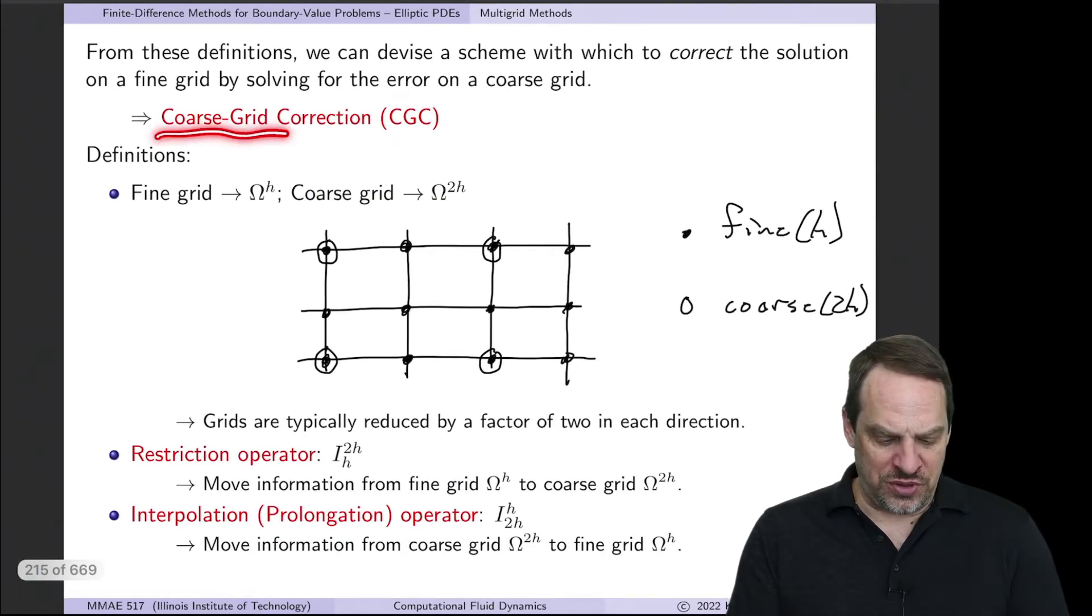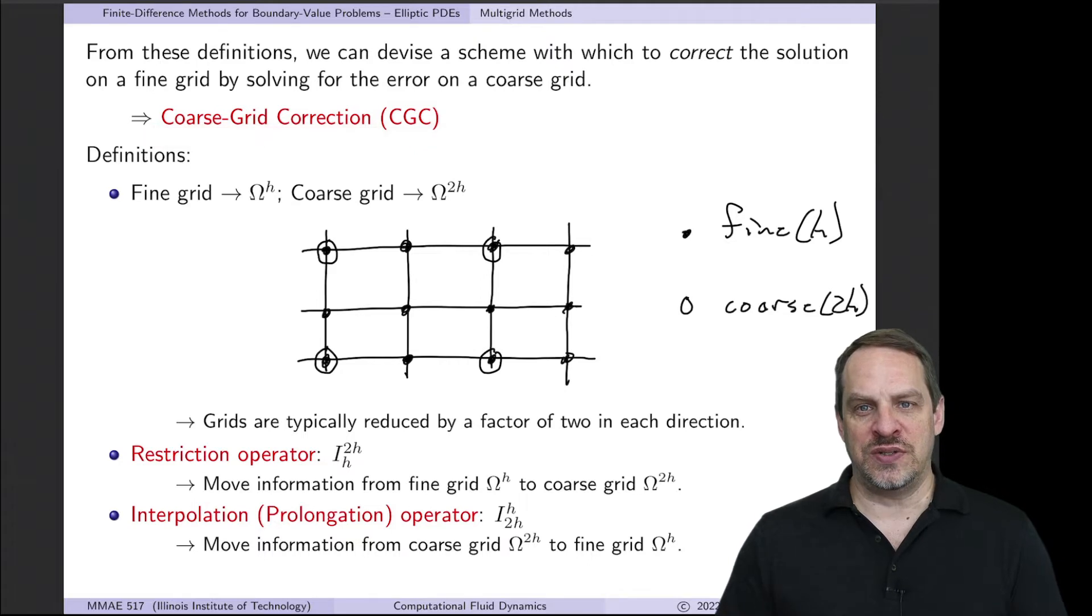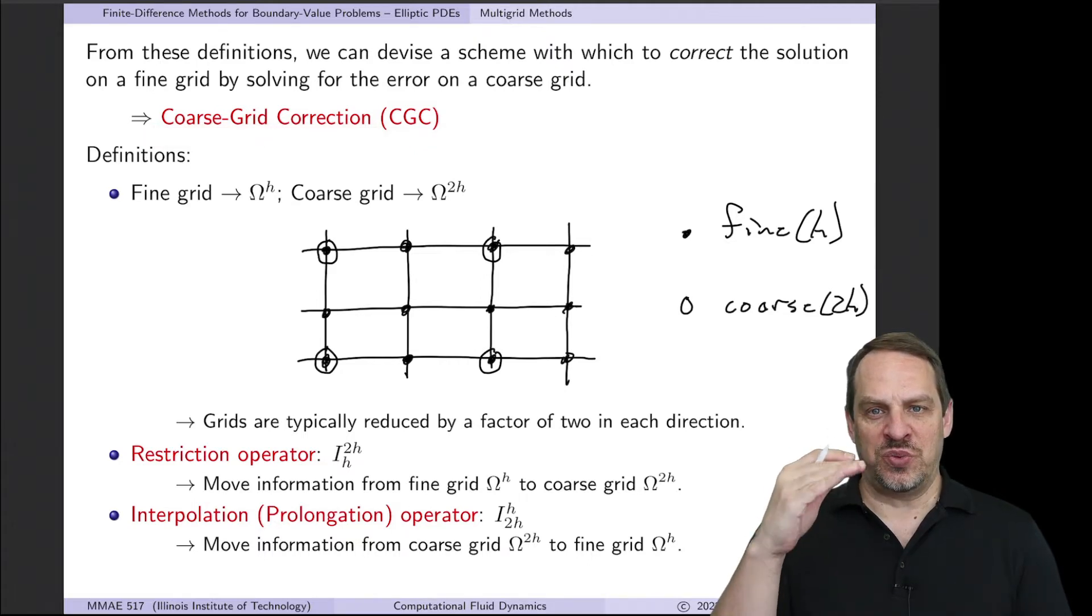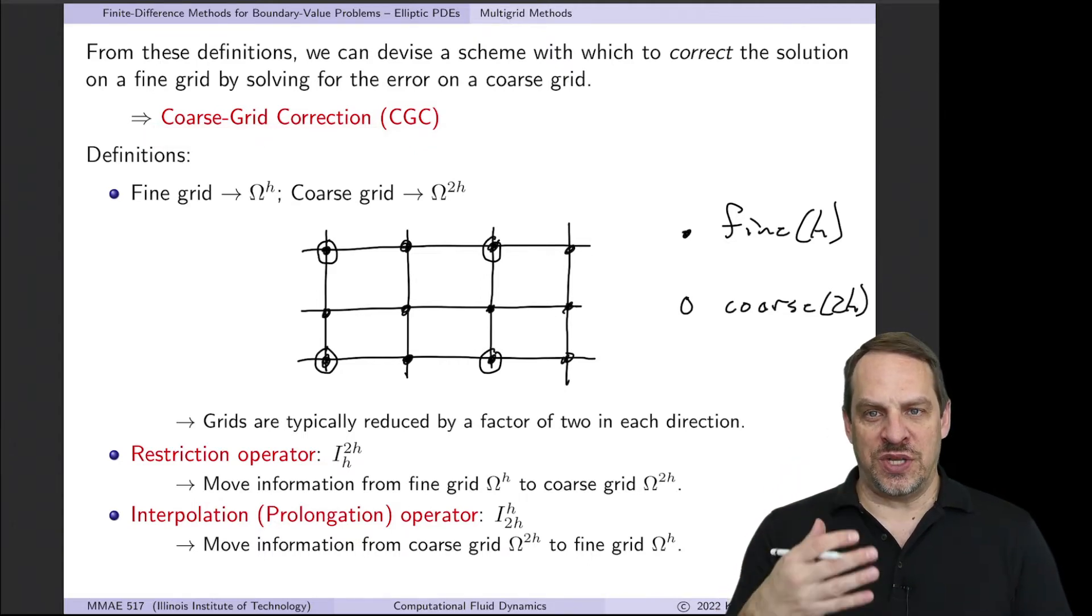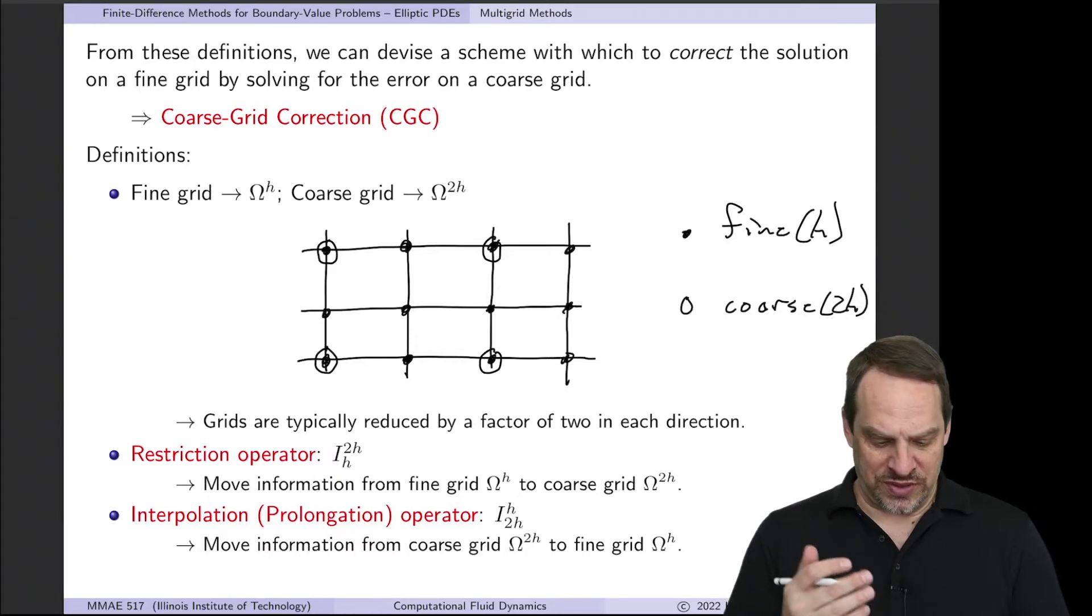I want to introduce the coarse grid correction, or the CGC scheme. This is the process by which we use coarser grids to update the solution and accelerate the iterative process.